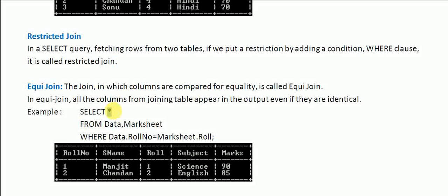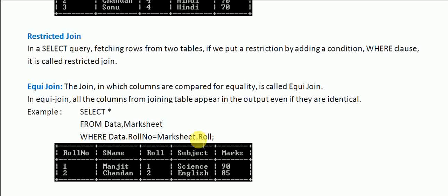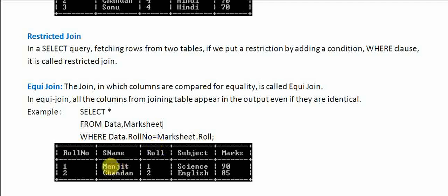In the example, SELECT * means all columns from both the data and mark sheet tables. The WHERE clause specifies data.roll_number = marksheet.roll, comparing the roll number column of the data table with the roll column of the mark sheet table. Rows where values one and two match will appear in the output.